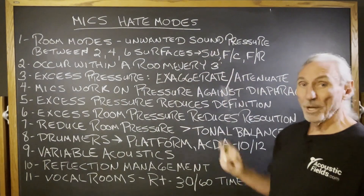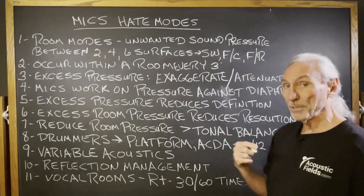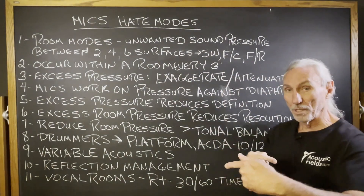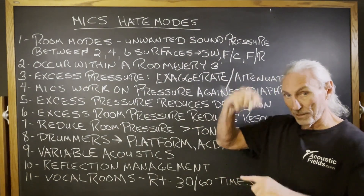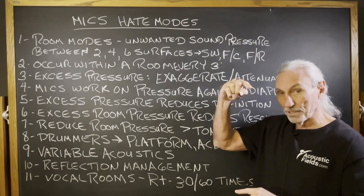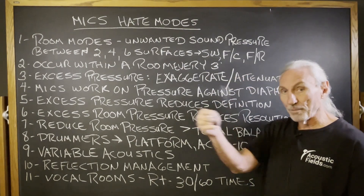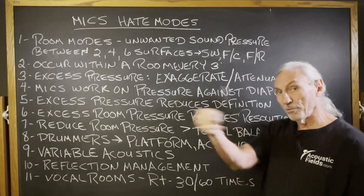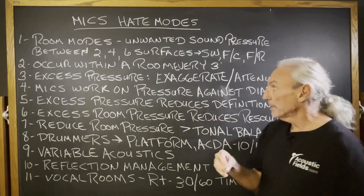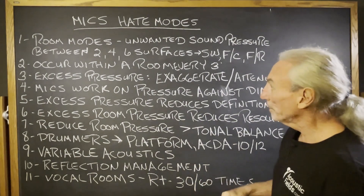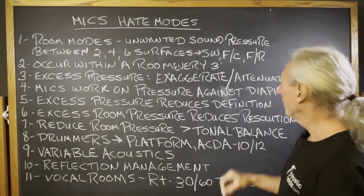Room modes are unwanted sound pressure between two, four, and six surfaces — sidewall to sidewall, floor to ceiling, front to rear. So we have those three sound fields in a room.